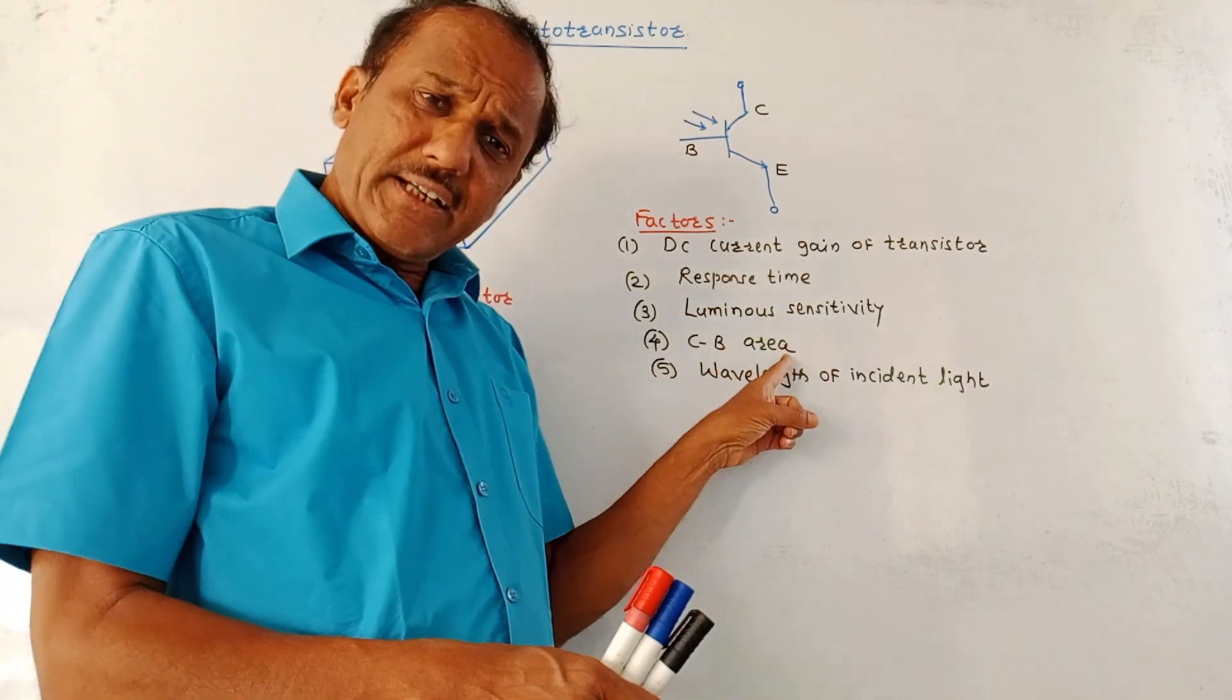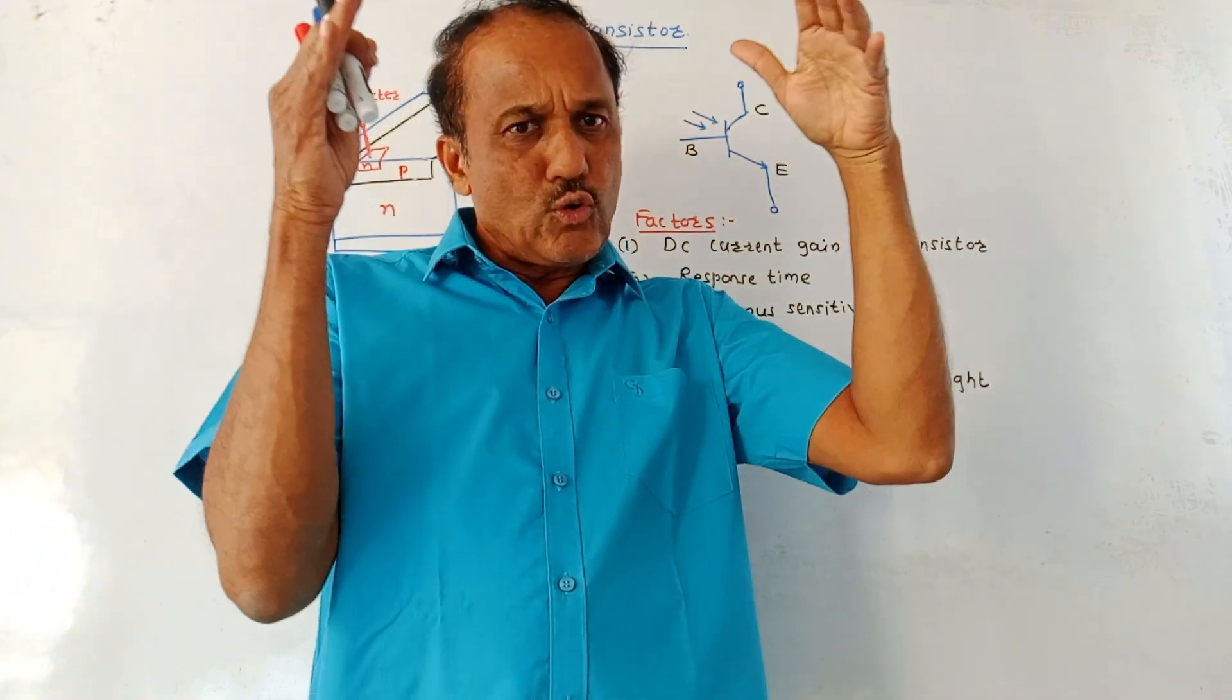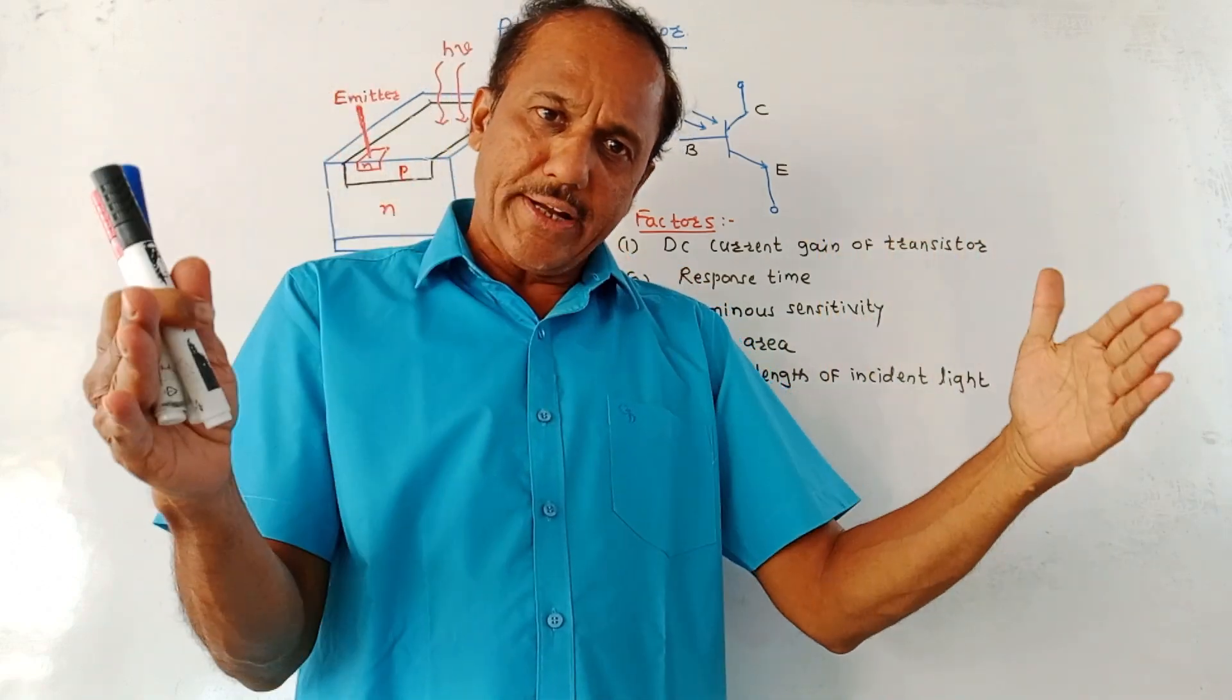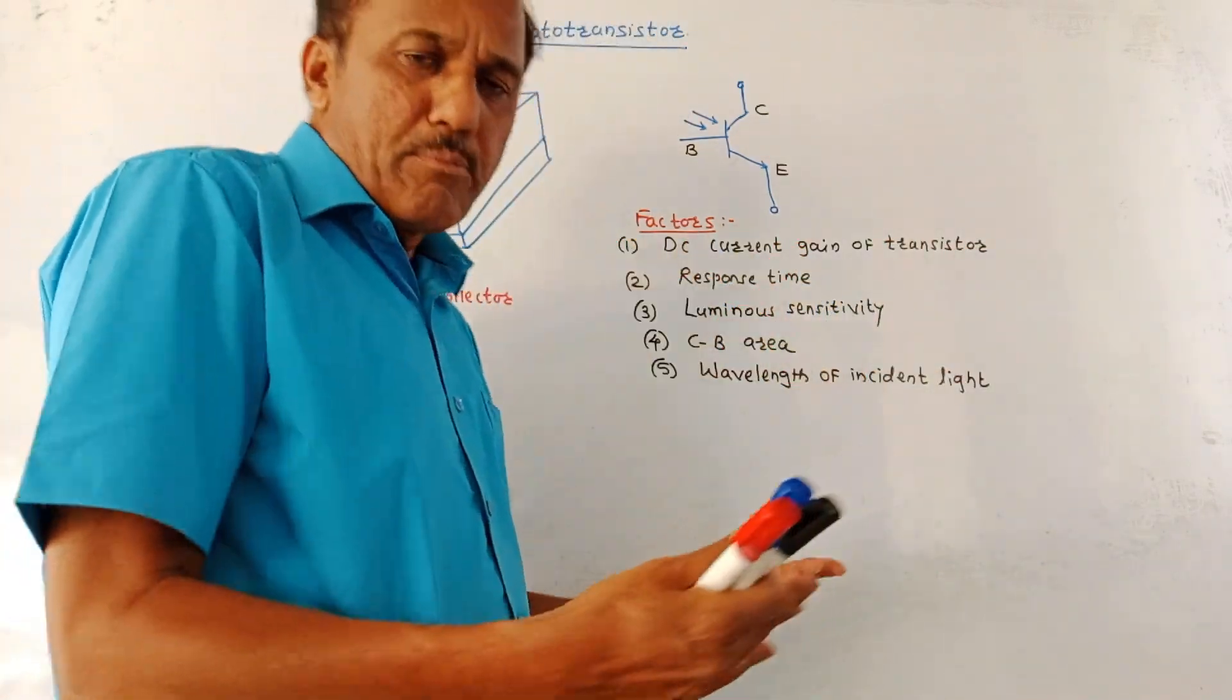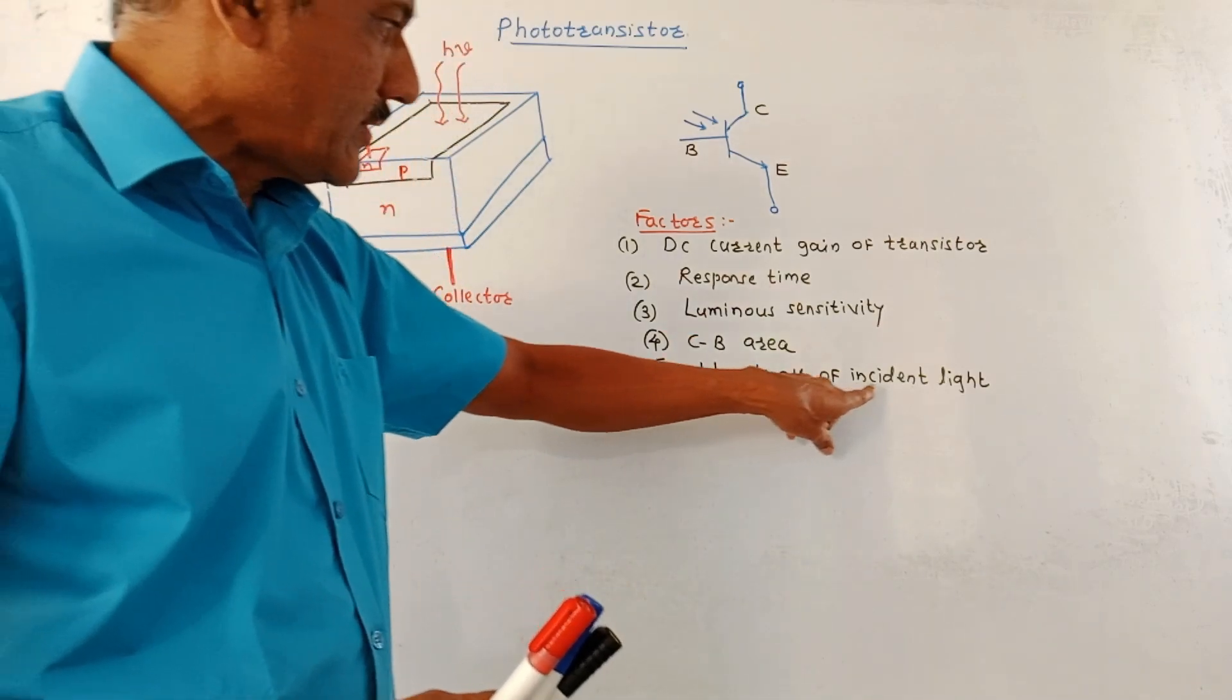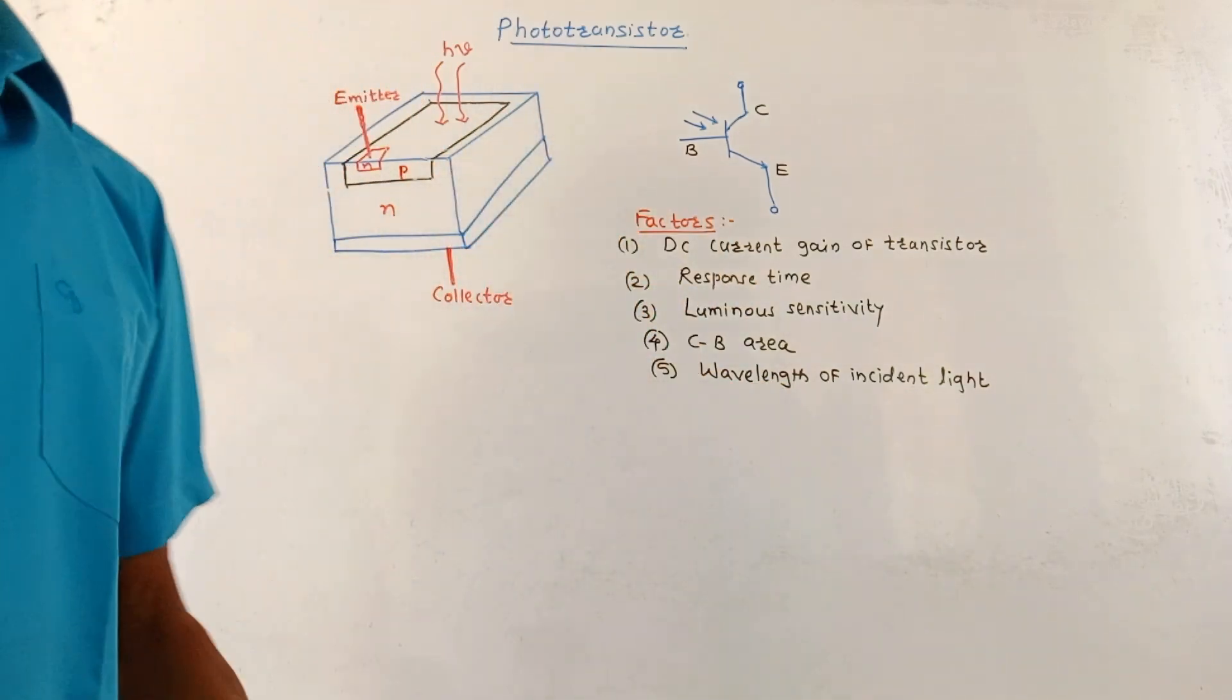Then collector base area. As shown in this diagram, as well as in this constructional diagram, incoming light is allowed to fall on the base terminal. If the collector base region is wider, then more photons will be falling on that surface and more number of electron hole pairs are generated. Next, it also depends on the wavelength of the incident light. This is about the construction and working of a phototransistor.